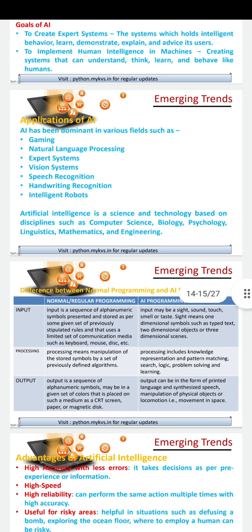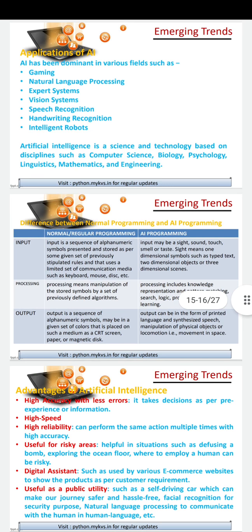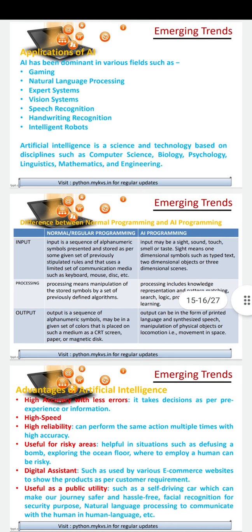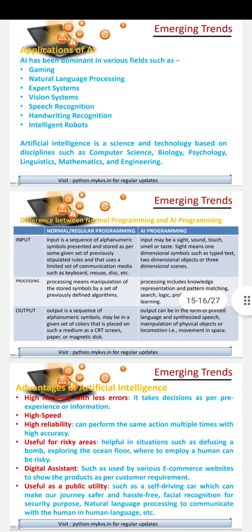We can say that robots are the best example of AI. We can say that the machine is an artificial intelligence that can remember, reason, or solve problems.